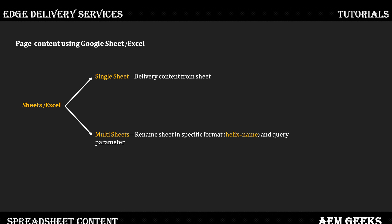We'll see that in a demo in a bit. If you have multiple sheets in a file, then each sheet should have a specific name prefix — otherwise your content won't be translated into JSON format. Each sheet is prefixed with 'helix-' followed by whatever name you want to give it.